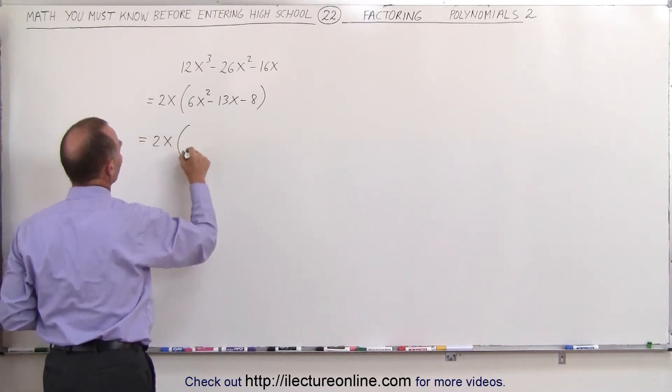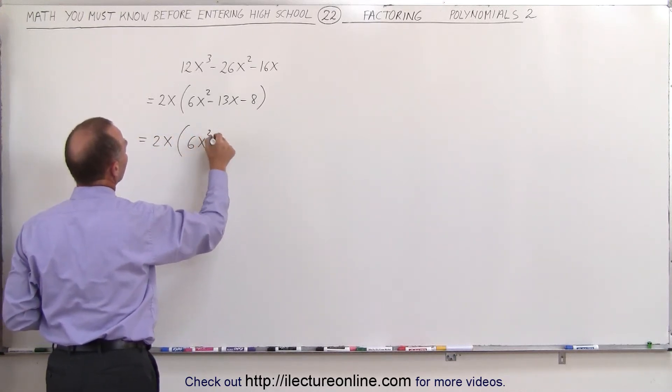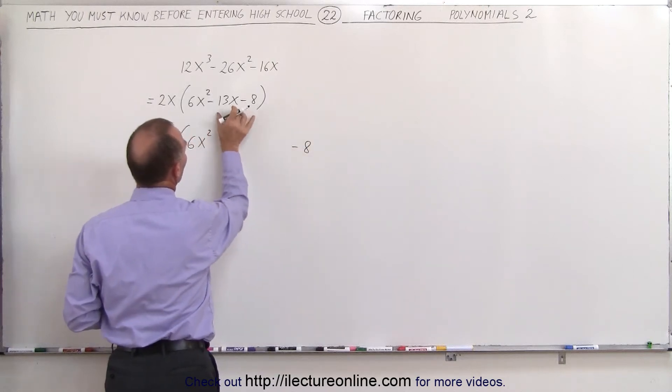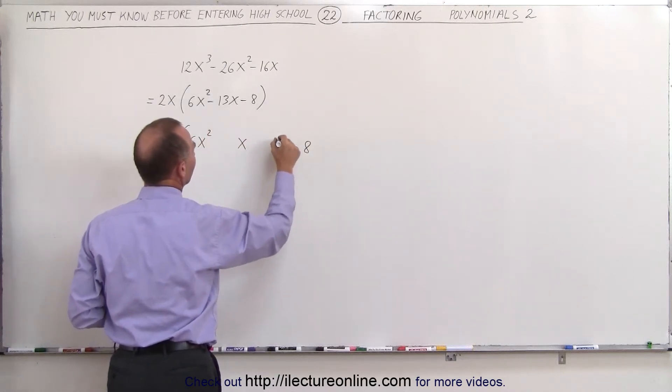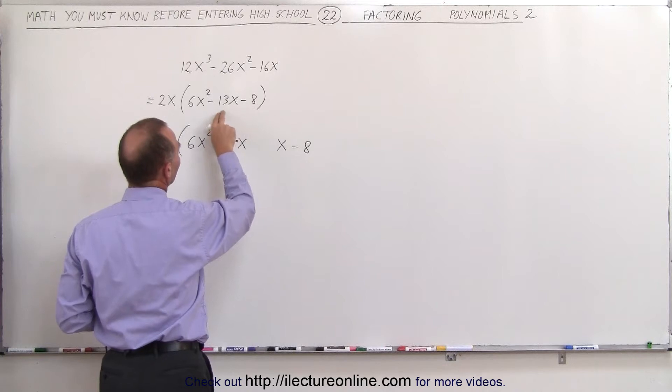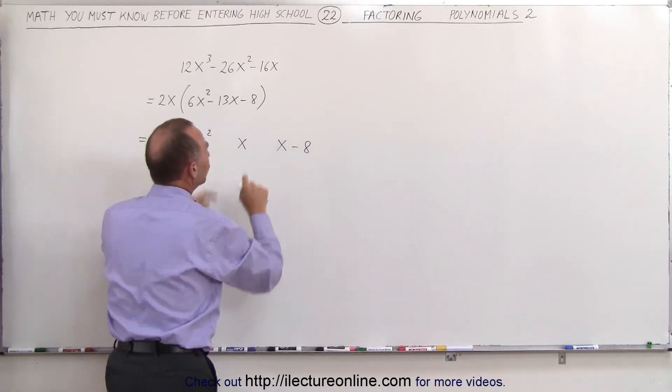So this can be written as 2x times the quantity 6x squared. We write the minus 8 over here. And then we'll write the x twice, because we're going to write minus 13x as a sum of two terms.